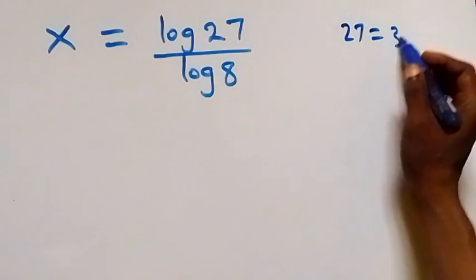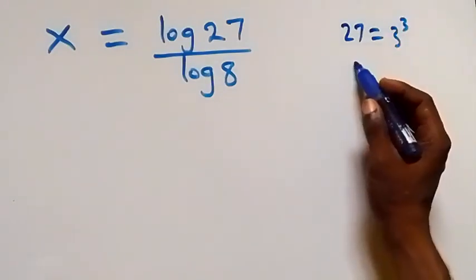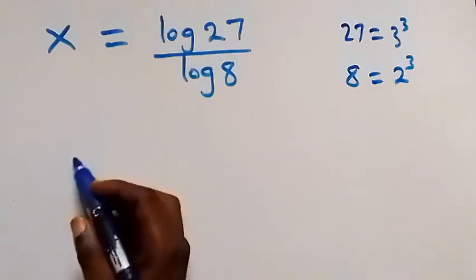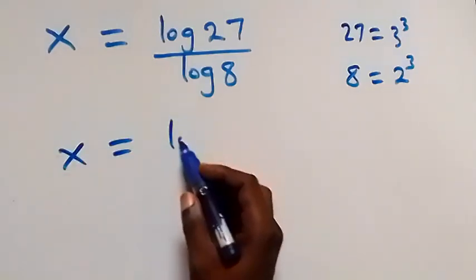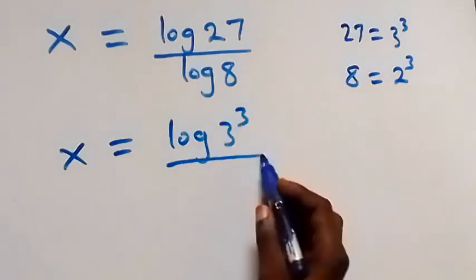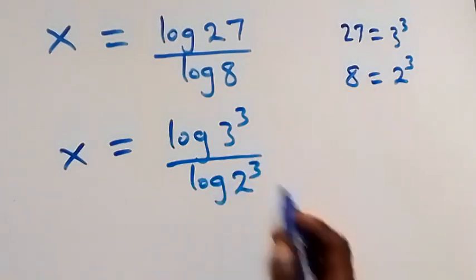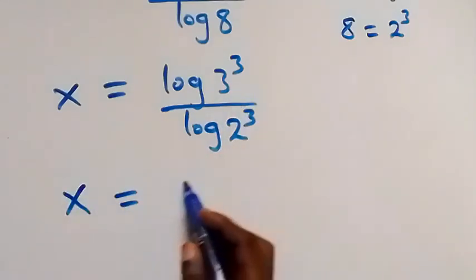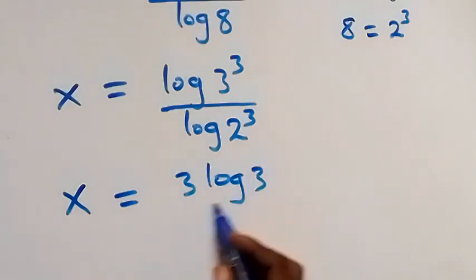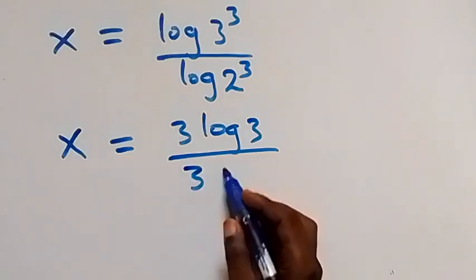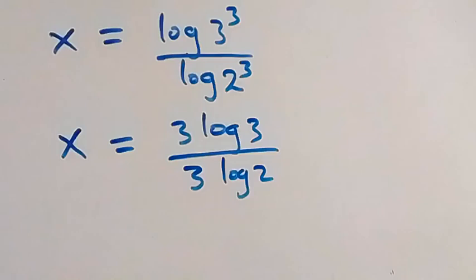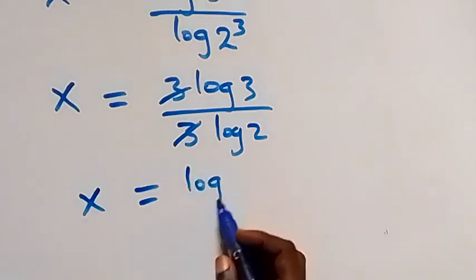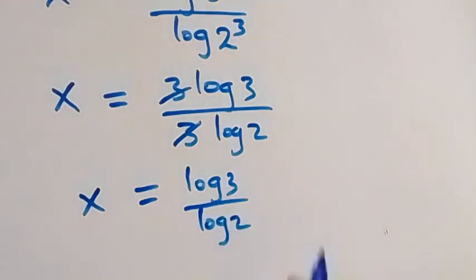Since 27 can be written as 3 raised to power 3 — that is, 3 multiplied by itself 3 times — and 8 can be written as 2 raised to power 3, we write x equals log of 3 raised to power 3 over log of 2 raised to power 3. Applying the power law of logs, this becomes x equals 3 log 3 divided by 3 log 2. The 3s cancel, giving x equals log 3 over log 2.